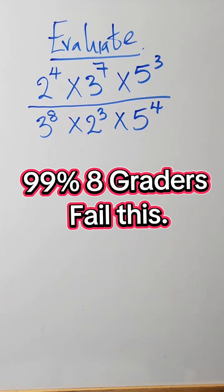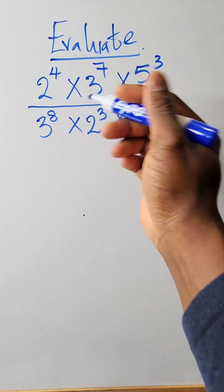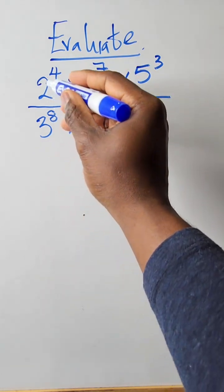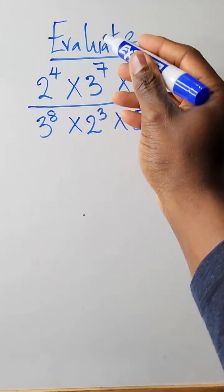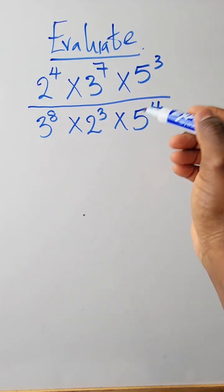So let's solve this question. We can rewrite this in a different way. Put all the 2's on one side, all the 3's on one side, and all the 5's on one side.